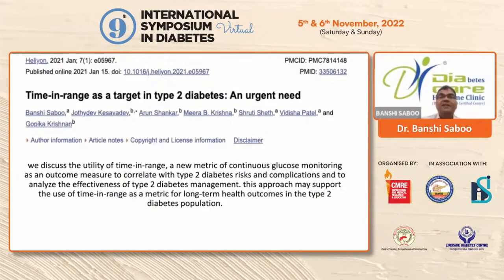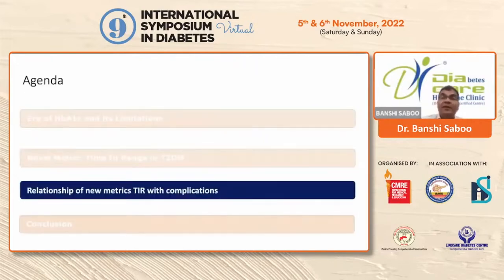Time in range should be considered a target for type 2 diabetes as well. I have written a paper stating that time in range should not only be for type 1 but also for type 2 diabetes. Using continuous glucose monitoring and asking patients to keep their glucose in range is itself an educational and motivational tool for them.